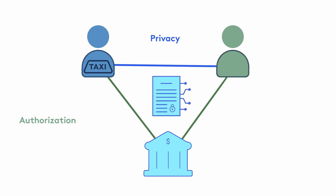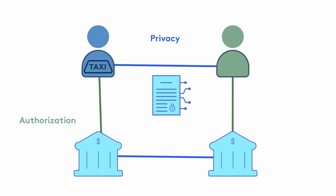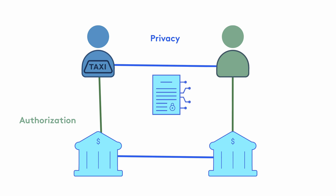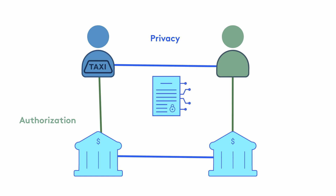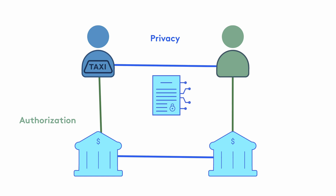In another scenario, if Alice and Bob use different banks, then Bank A, which is Alice's bank, should not be able to see Bob's account, and Bank B, which is Bob's bank, should not be able to see Alice's account. DAML helps us implement these controls in the contract so that multiple parties representing different legal entities can safely engage in transactions by maintaining their authorization and their privacy.